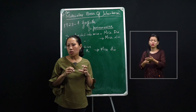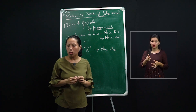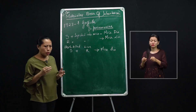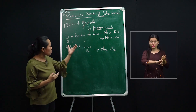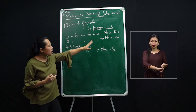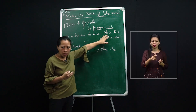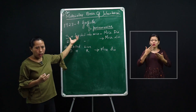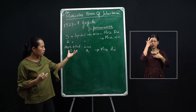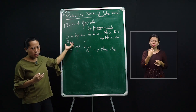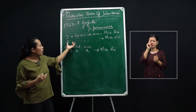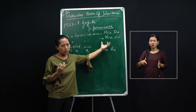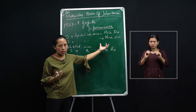In his experiment, Griffith injected the S strain into mice and the mice developed pneumonia and died, because the S strain is virulent and pathogenic. In another experiment, he took the R strain — the avirulent strain — and injected it into mice. The mice did not develop any pneumonia or symptoms, and the mice survived.